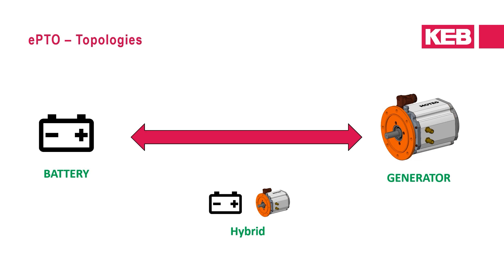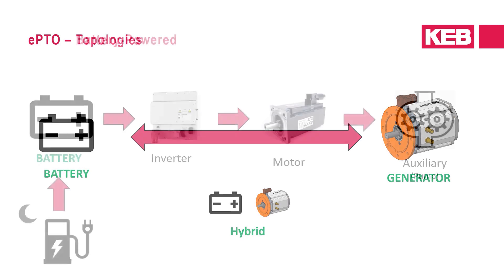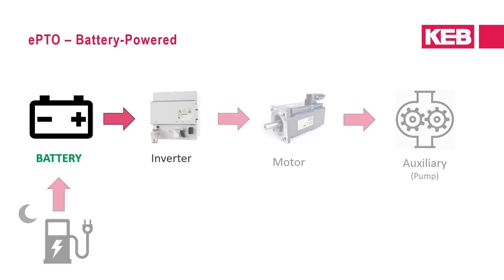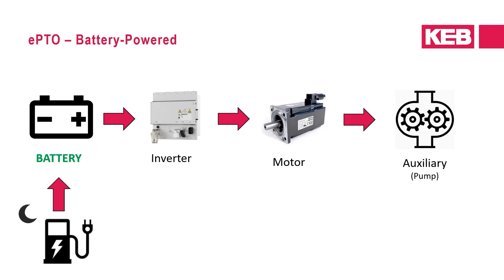There are two primary topologies for EPTO: battery powered and generator powered, and which is used may depend on the requirements of the vehicle. There are also hybrid solutions. In the battery powered EPTO example, the battery supplies DC power to the inverter, which controls the electric motor to drive the hydraulic pump to provide fluid mechanical force to the body equipment. Here, the battery would be part of an already fully electrified vehicle or battery modules added to an existing combustion vehicle, generally relying on the batteries being charged overnight for a full day's operation.